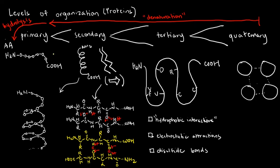There are four levels of organization: primary, secondary, tertiary, and quaternary. And as you go from left to right, the level of complication becomes even higher. That means that the primary level is the most simple of the levels of organization.